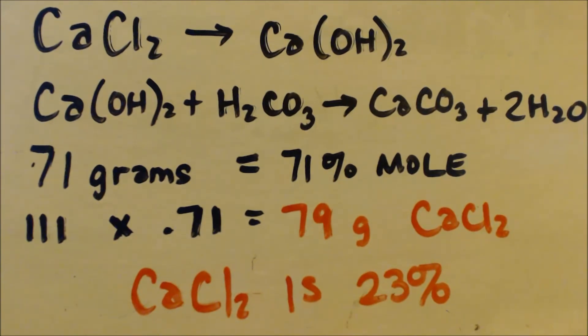I got 71 grams. That's 71 percent of a mole. So if I took, and this is a mole of calcium chloride, so if I take 71 percent of that, that means I only started with 79 grams of calcium chloride, which means that the stuff I started with, the 350 grams, only 23 percent of that is calcium chloride.